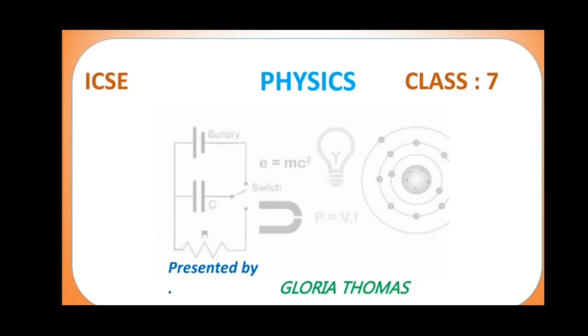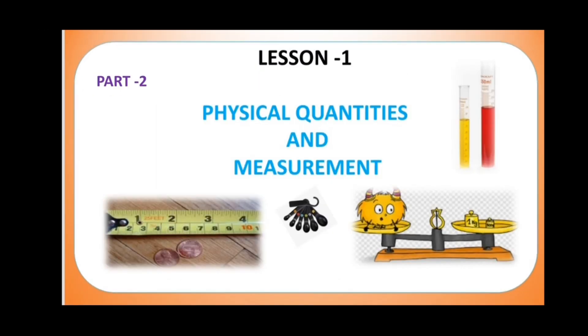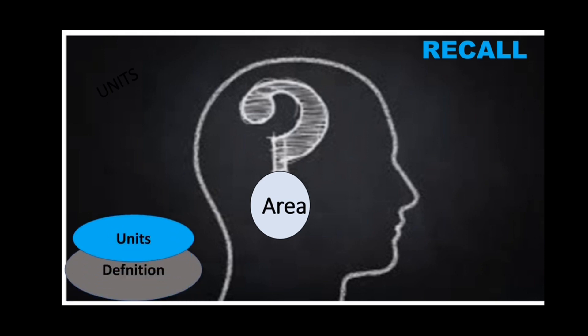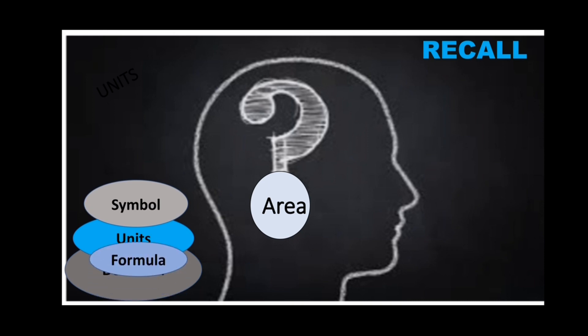Hi students, welcome back to the second part of the class discussing physical quantities and measurement. Let us recall what we have learned in the previous class. In last class we learned about a physical quantity named area — its definition, different units of area and its relation with the SI unit, and the formula for measuring the area of regular solids.